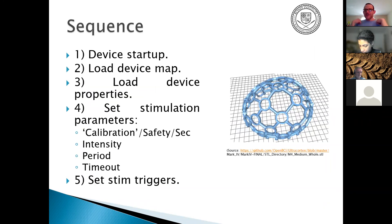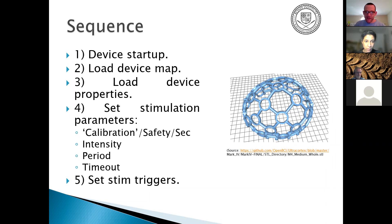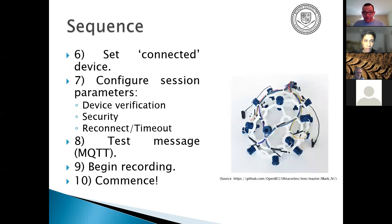The sequence: you load the device, it starts up, you load the 10-20 map of all transducer, sensor, and hybrid device locations. You set your stimulation parameters — where to stimulate, calibration for each use, intensity, timeout, safety, security. You set stimulation triggers — for example, if I think about moving my left hand, it stimulates focused ultrasound that affects my friend's left visual cortex. Then you connect the device wirelessly or wired (maybe Bluetooth, as OpenBCI does) and configure session parameters like device verification, security, reconnection, and timeout.